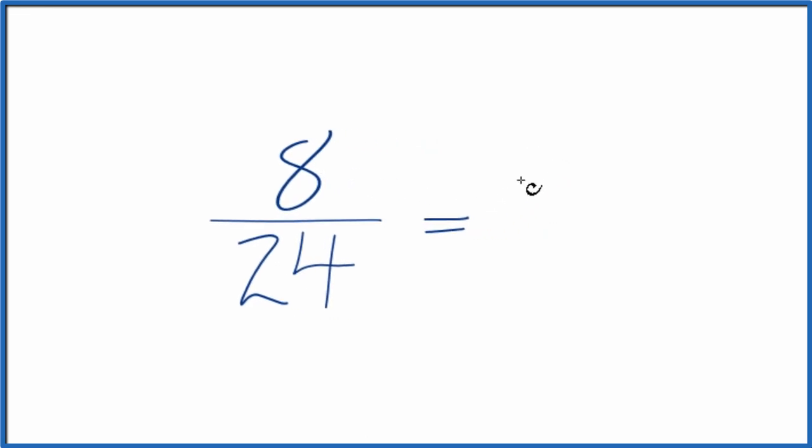8 divided by 2, that's 4. 24 divided by 2, that's 12. So 4 12ths, that's an equivalent fraction to 8 24ths. But we could even simplify this further, because 2 goes into 4 and 12 evenly.